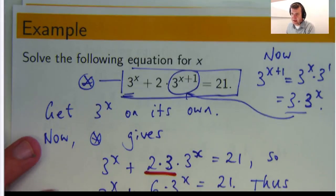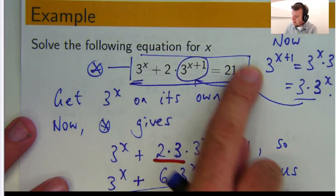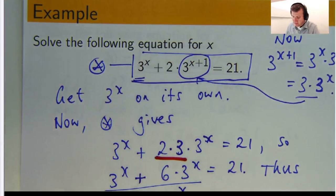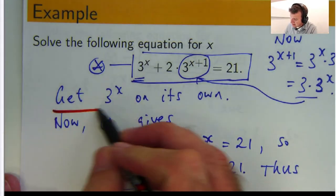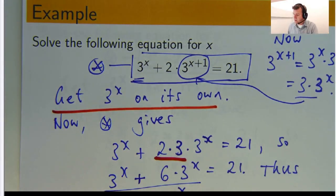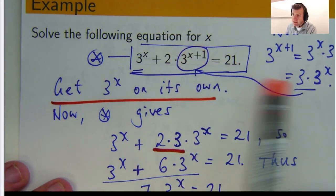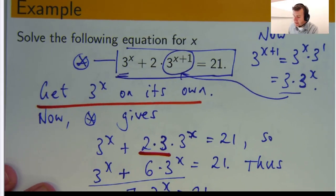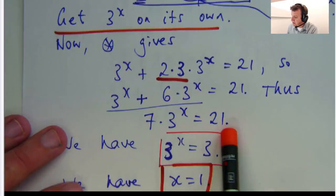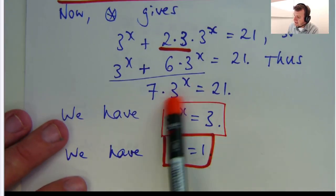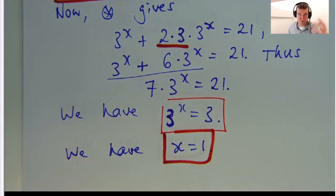So let's just recap. We were given this exponential type equation. The first step was to get 3 to the x on its own. We did that by breaking this up using our index laws. And then we just simplified with a bit of algebra and got down to something like this. And then we could just work it out just by looking at it.